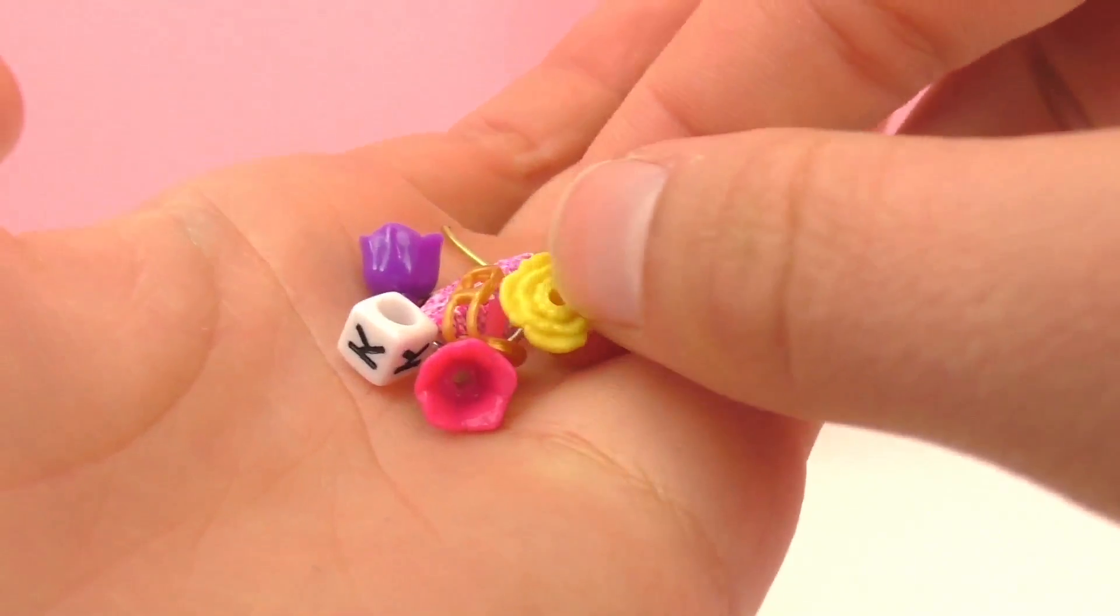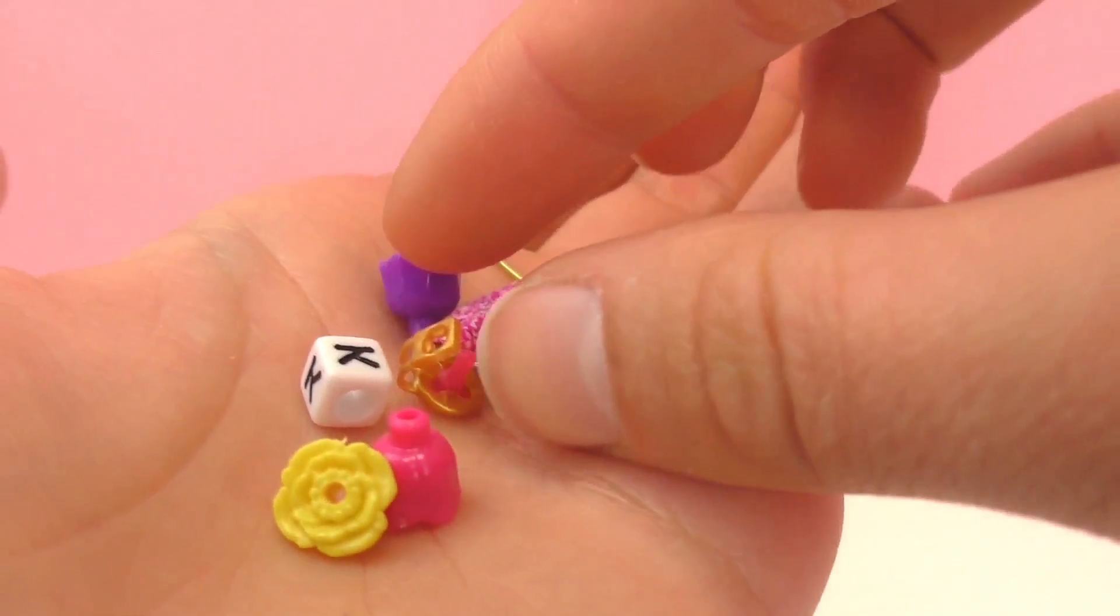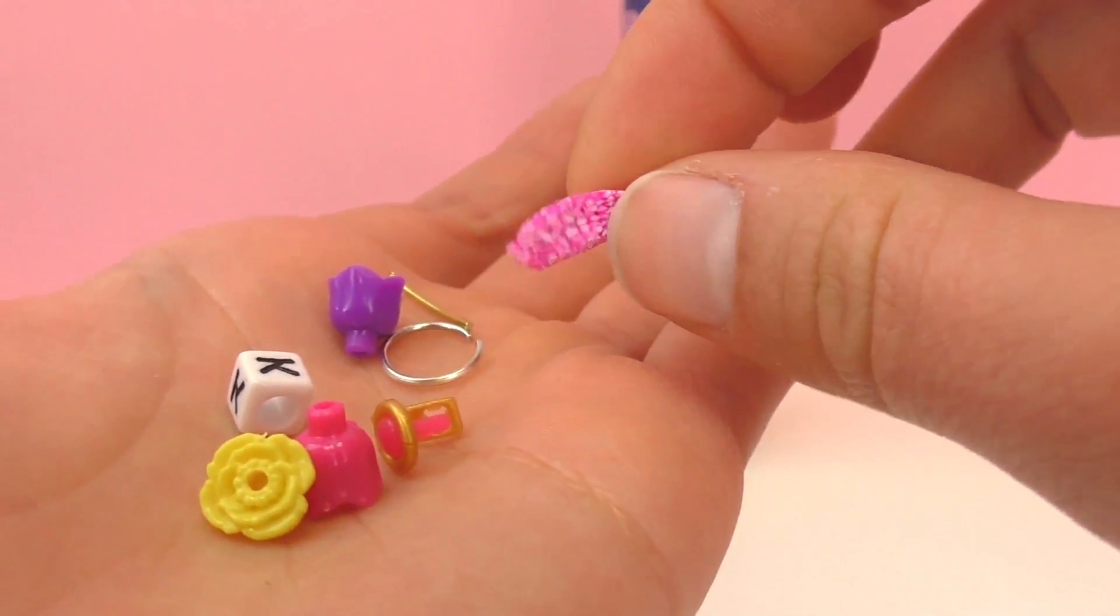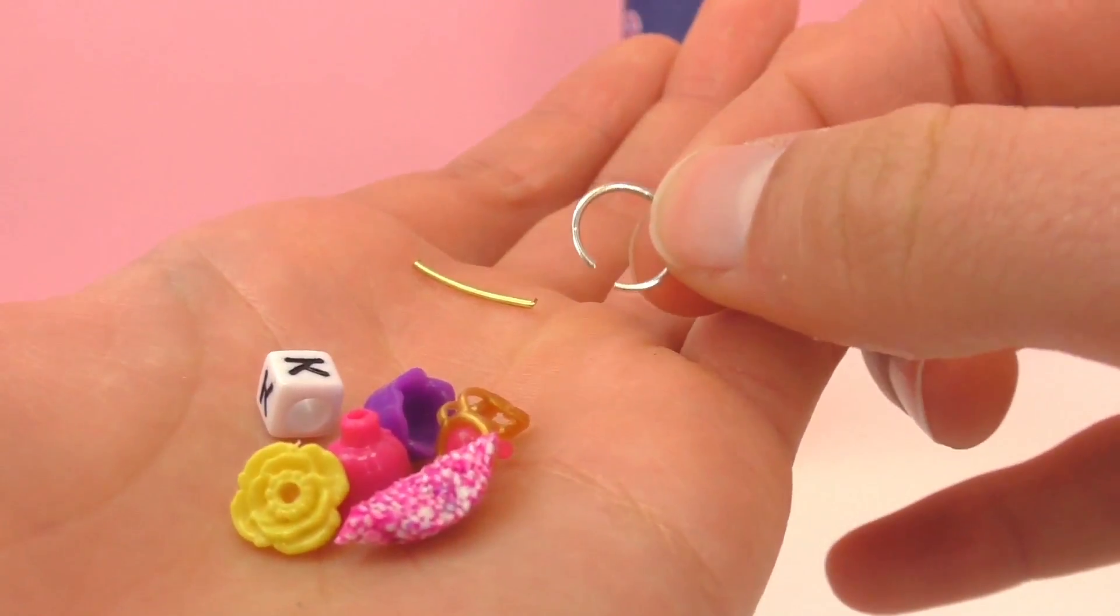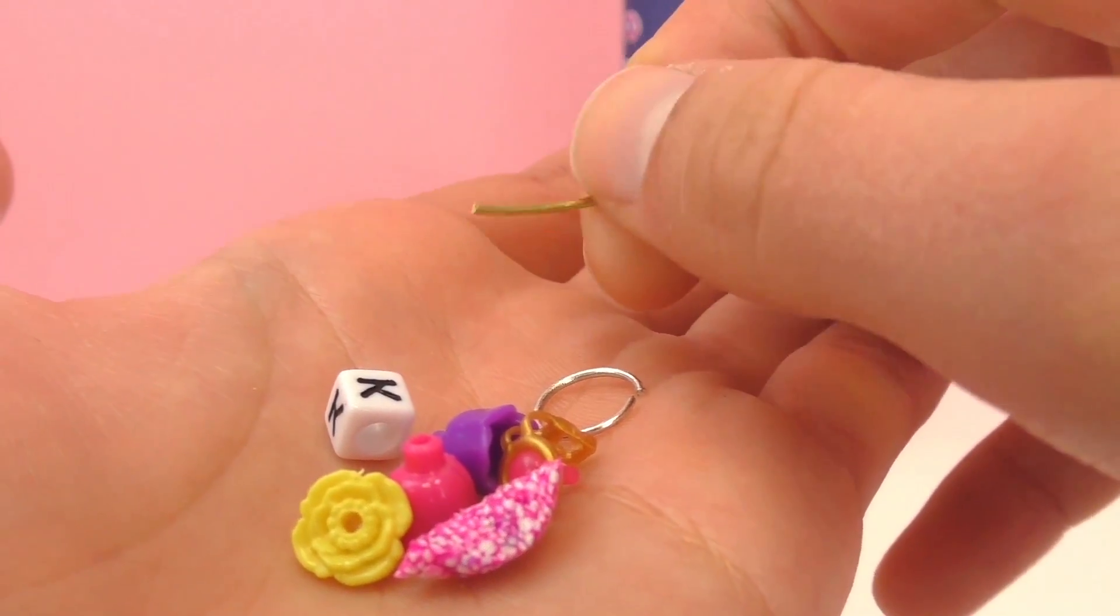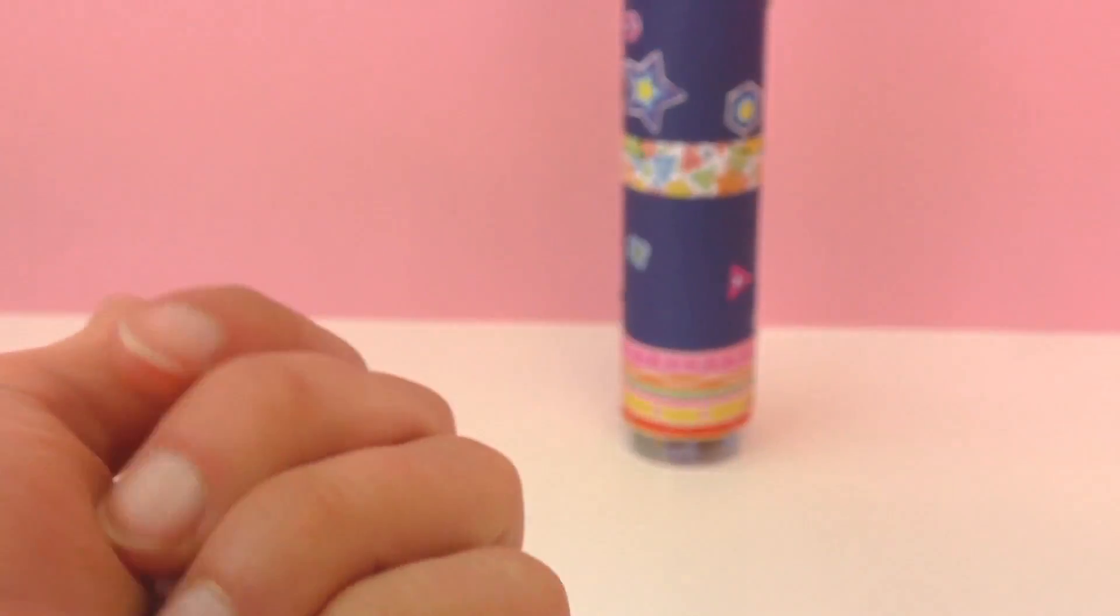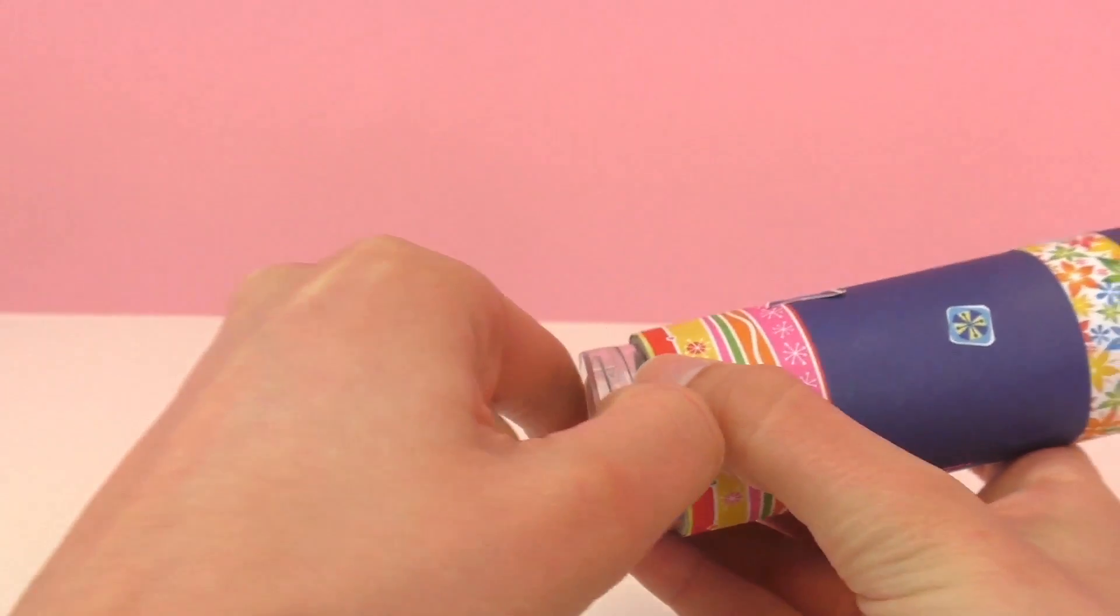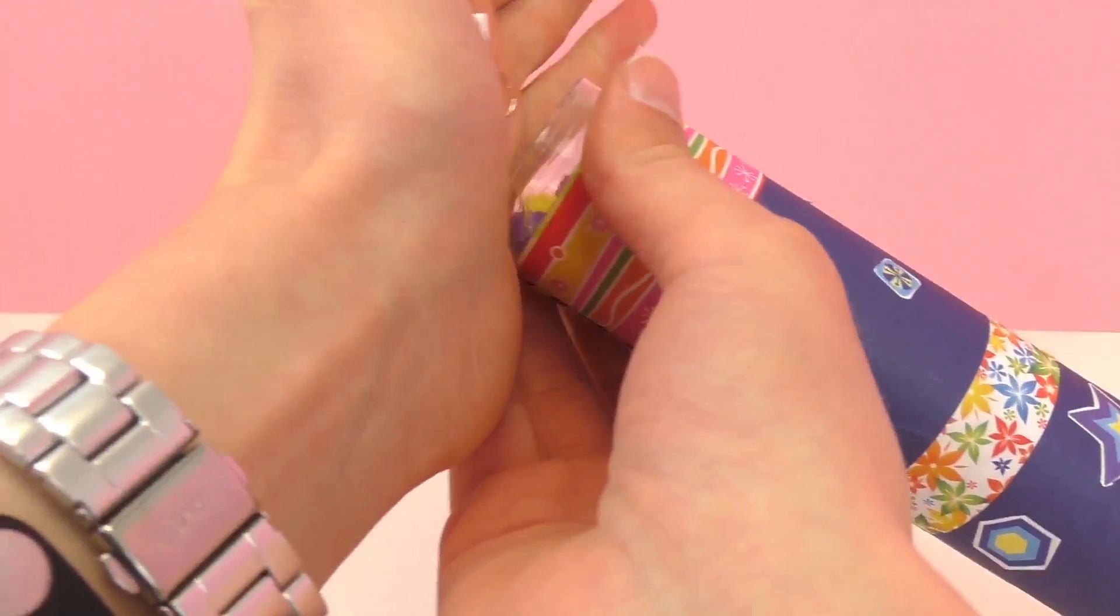So here I found a few things around the house. I have a flower, another flower, this is a piece of jewelry from a doll, some foam clay, a necklace from Barbie, a small piece of metal, and also a bead with the letter K. So I'm going to take out my colored rocks and put in some of these things and we're going to see how it looks.